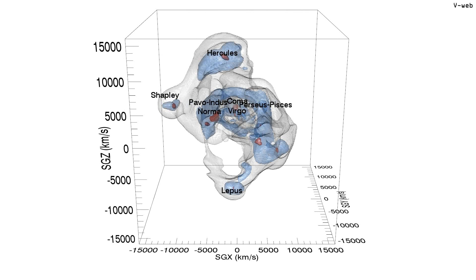Here we see contours of the cosmic web as defined by the velocity web. Local eigenvalues of the shear tensor are evaluated giving the red, blue, and white contours enclosing knots, filaments, and sheets.